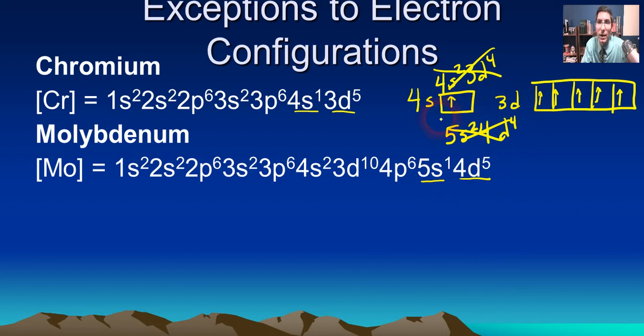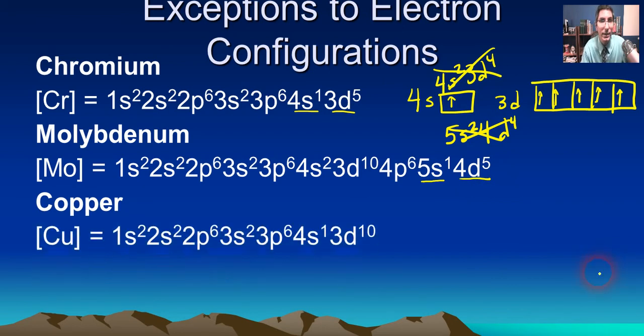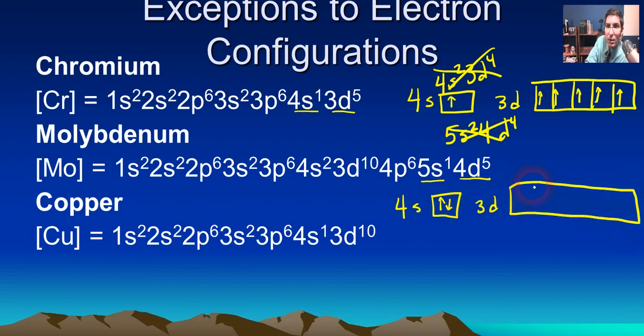So it essentially does the same thing here, except with 5s and 4d. Now if we get toward the farther right-hand side of the transition metals, copper is an exception to our expected electron configurations. Copper, if you look at the periodic table, you would expect it to be 4s2, and then 3d with the 5 orbitals. You'd expect it to be 1, 2, 3, 4, 5, 6, 7, 8, 9.